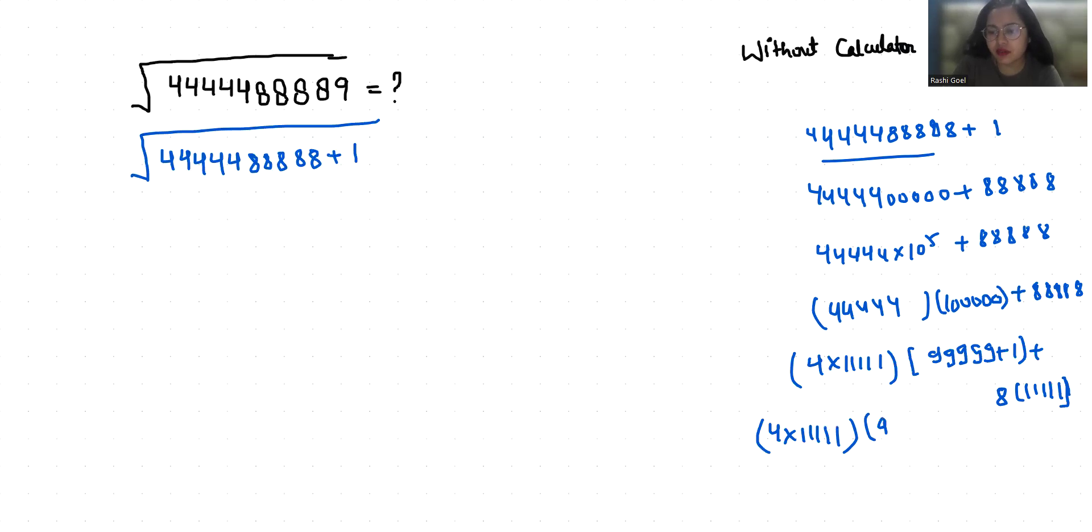Now if I take substitution, let a equals 11111. So it becomes 4a times 9a plus 1 plus 8a.